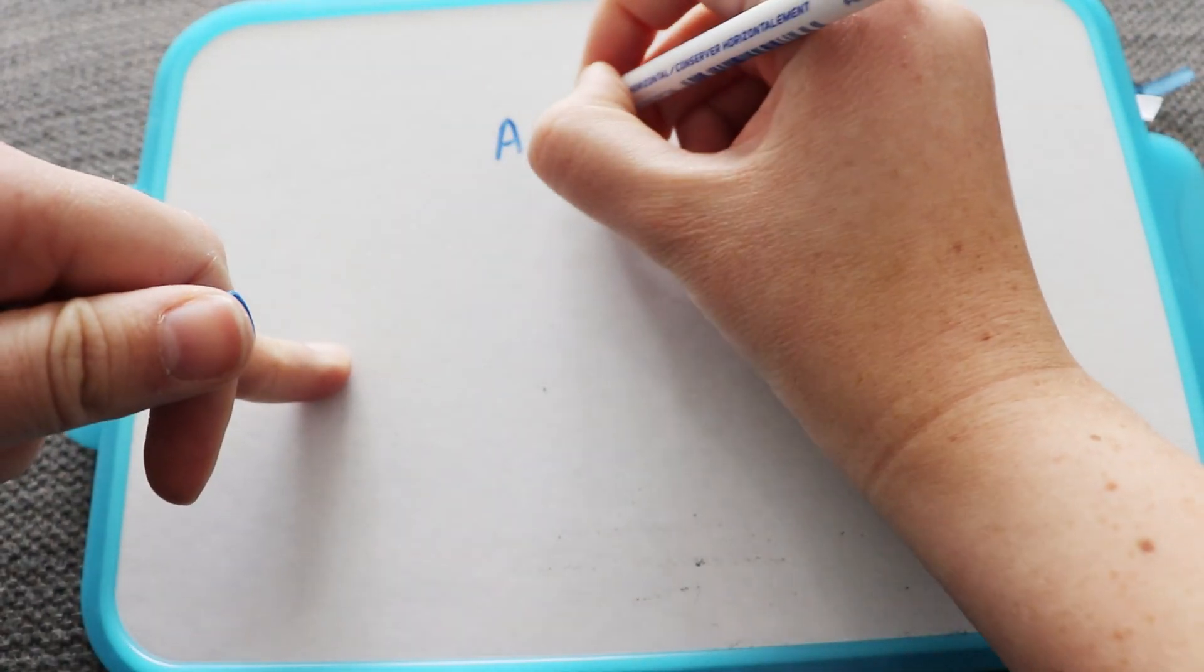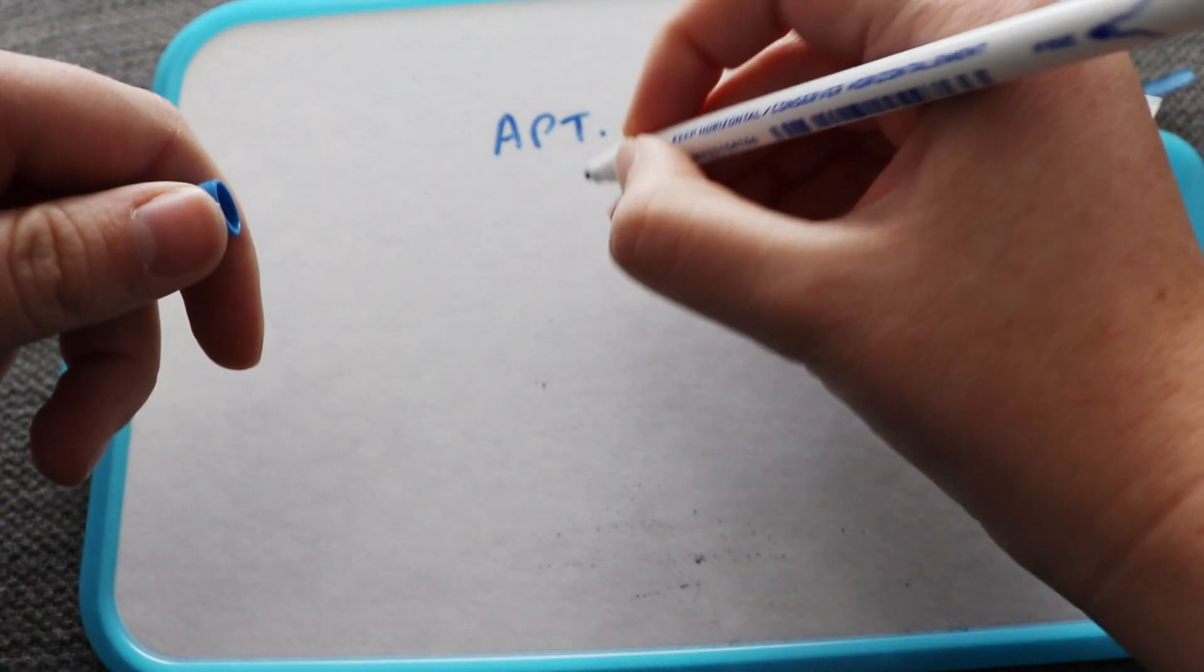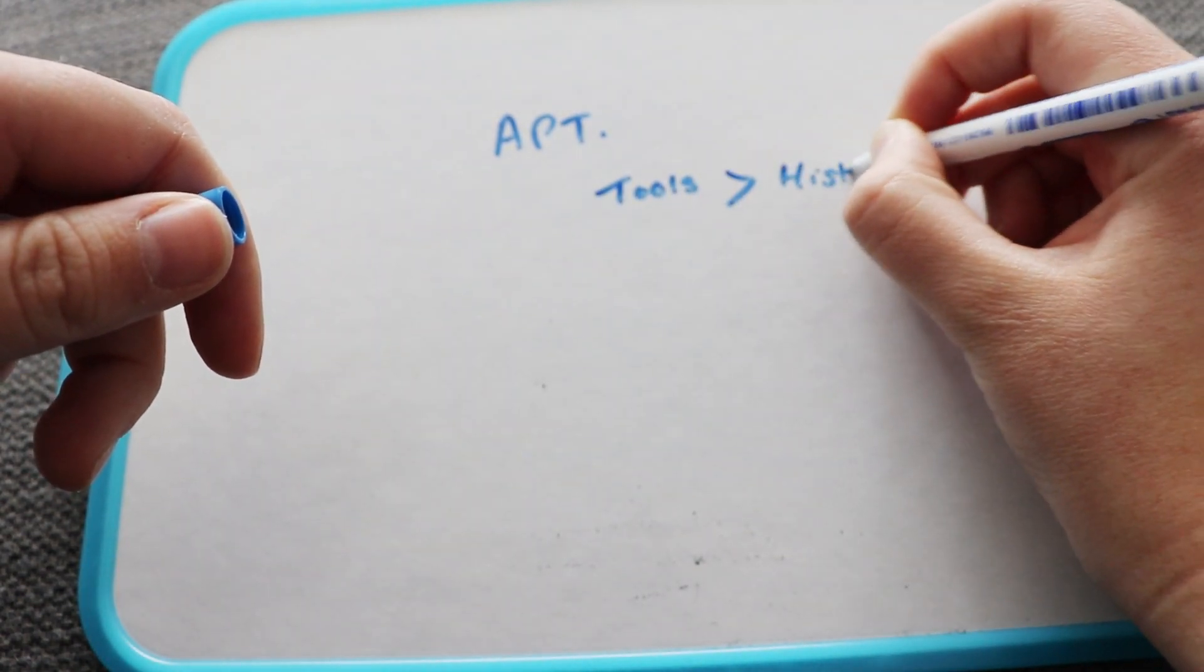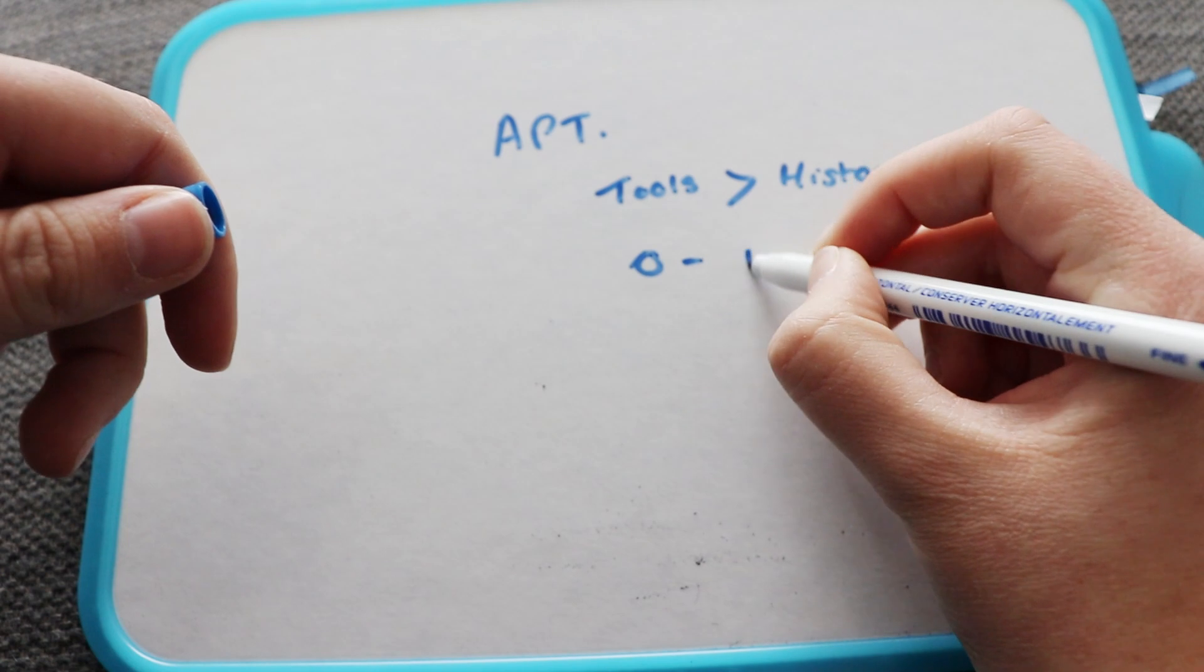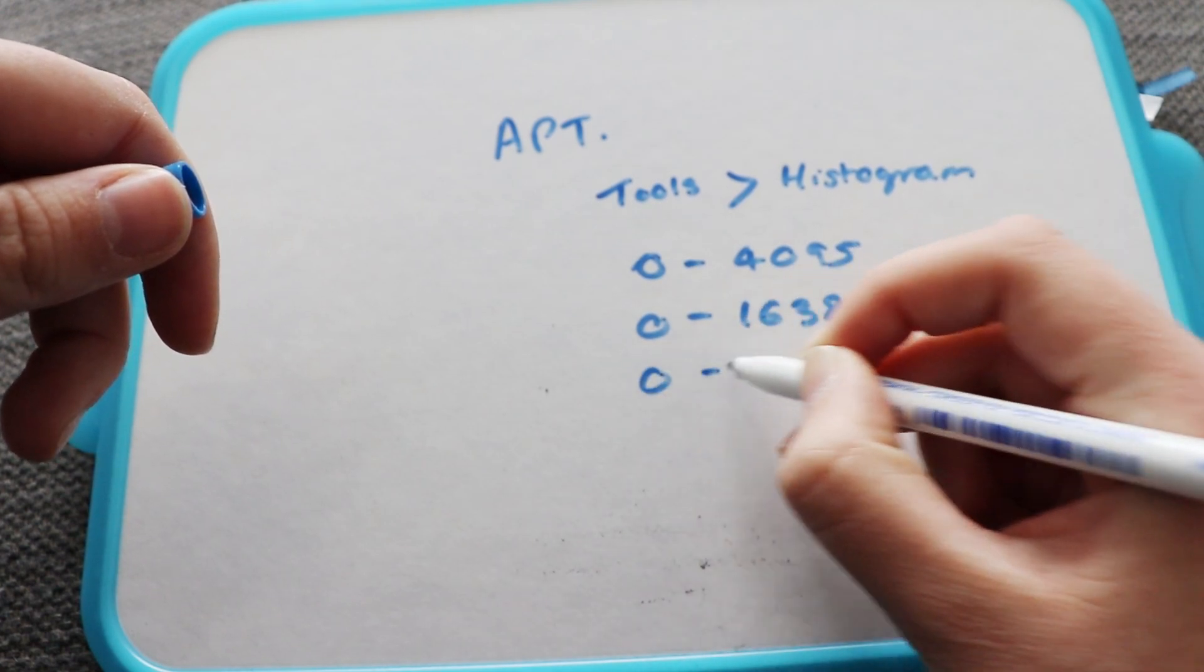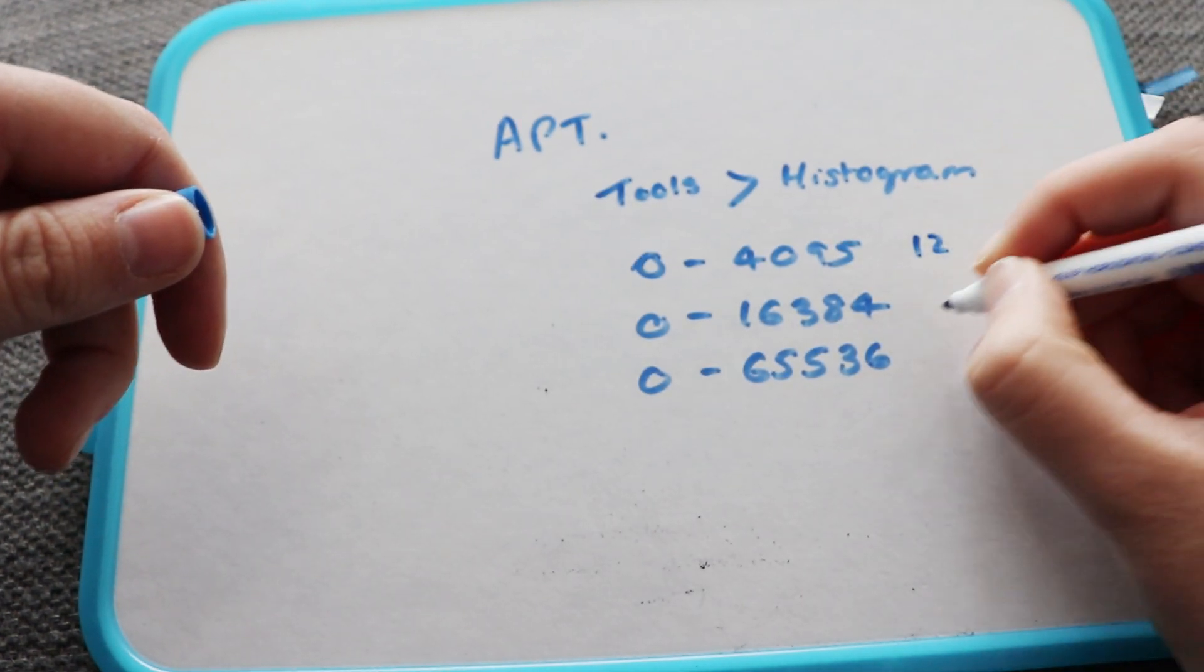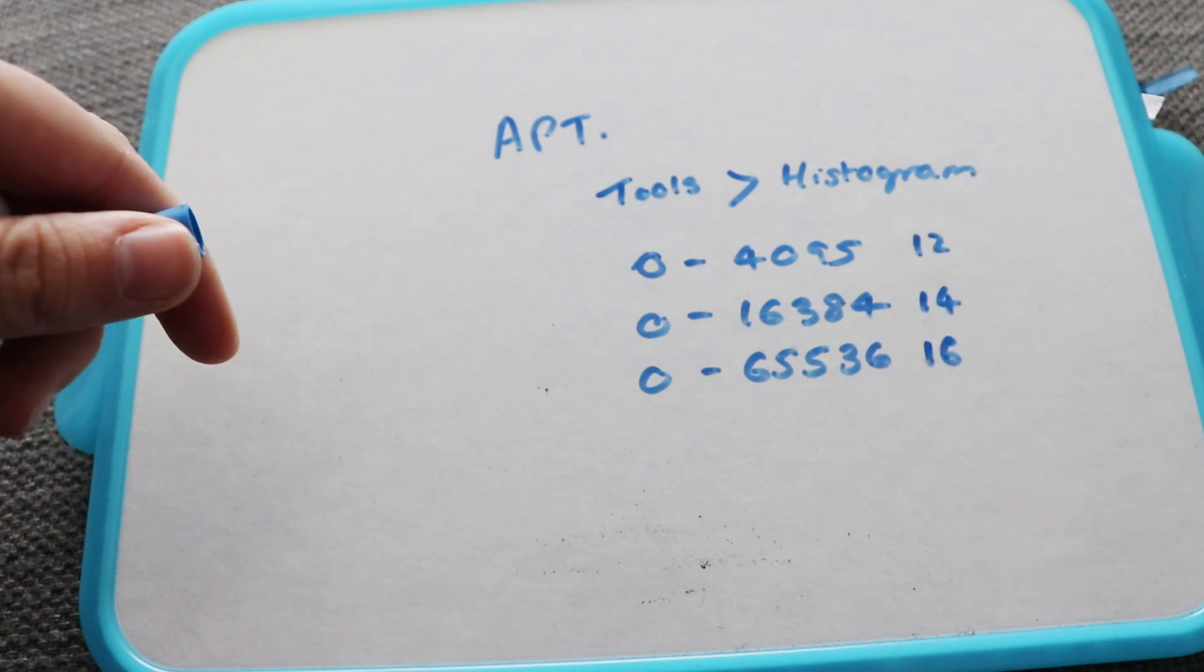You might be thinking, how do I know if my other programs such as APT are scaling up to 16 bit? Well, you can find this out pretty easily by going to tools, then histogram. A histogram will pop up, but it will also give you a range on there. Depending on what it tells you the range is, you can figure out whether it's scaling up to 16 bit.